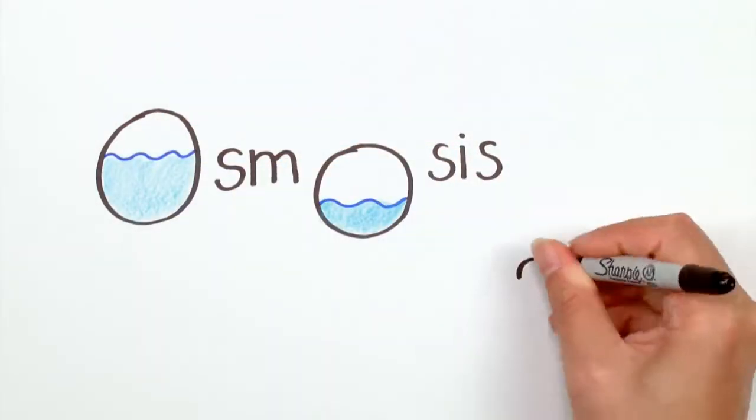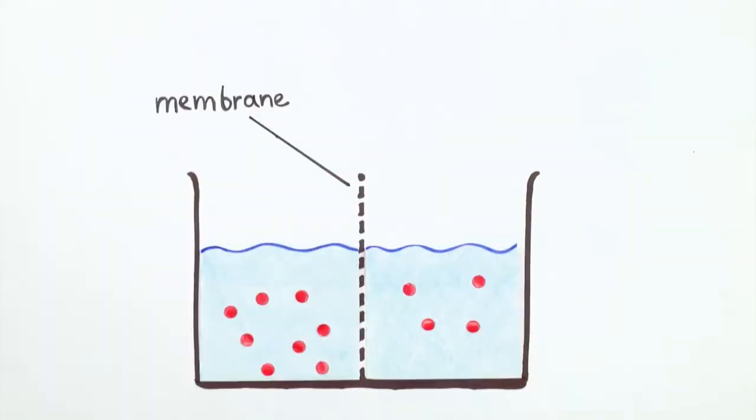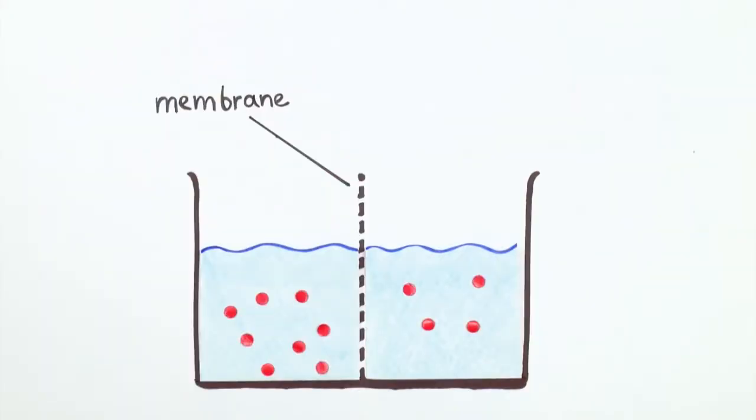What is osmosis? Let's say that you have two liquids, each with different concentrations of salts, separated by a membrane. Osmosis is the exchange across the membrane that allows the concentrations to become equal.